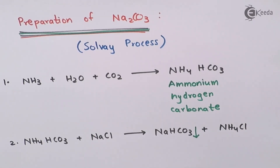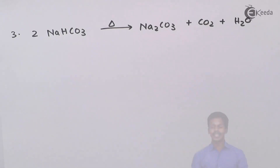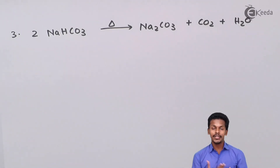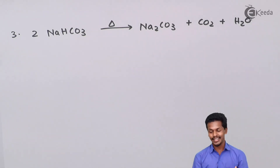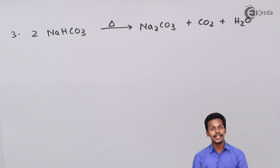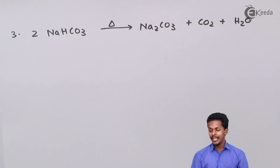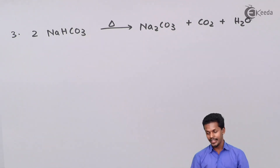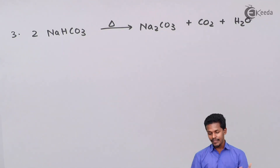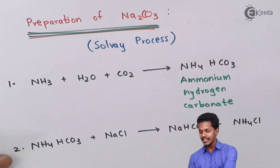The third step involves sodium hydrogen carbonate, also called sodium bicarbonate, which has been precipitated and undergoes thermal decomposition so as to form Na₂CO₃ — sodium carbonate — along with carbon dioxide and H₂O. However, this is not the only product we get; another important product is NH₄Cl, which we obtained in step two.